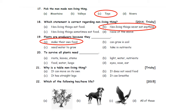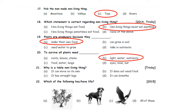Twentieth: To survive, all plants need — Option A: fruits, leaves, stems. Option B: light, water, nutrients. Option C: food, water, lungs. Option D: eyes, nose, ears. To survive, all plants need sunlight, water, and nutrients. So, Option B — light, water, and nutrients — is the correct answer.